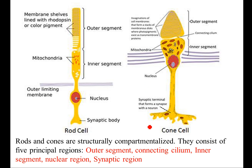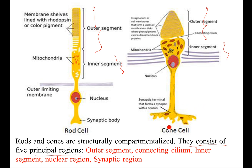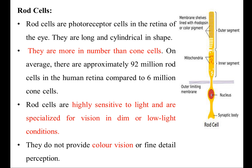Rod and cone cells are structurally compartmentalized. They consist of five principal regions: the outer segment, the inner segment, the cilium, the nuclear region, and the synaptic region. The synaptic region is responsible for transferring signals from one cell to another.